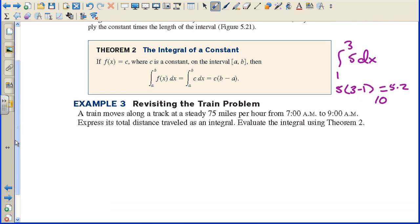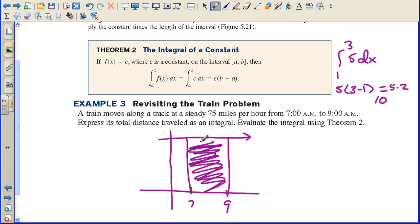So in the train problem that we looked at yesterday, a train moves along a track at a steady 75 miles per hour. We saw that as a line from 7 o'clock to 9 o'clock, and we constructed a rectangle. Here's the area which represents the distance the train has traveled. Express its total distance as an integral and evaluate the integral using theorem 2. The integral is from 7 to 9 of the function y equals 75. It would be dt since this is in time. To evaluate a constant function, you just take 75 times 9 minus 7. That's 75 times 2, and we again end up with 150 miles.